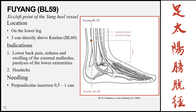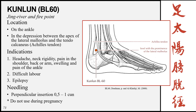The next point is Fuyang, Bladder 59, the xi cleft point of the meridian — xi cleft points are used more commonly for acute conditions. This point is located on the lower leg three cun directly above Kunlun, Bladder 60. Indications include lower back pain, redness and swelling of the external malleolus, paralysis of the lower extremities, and headache. Insertion is perpendicular 0.5 to 1 cun.